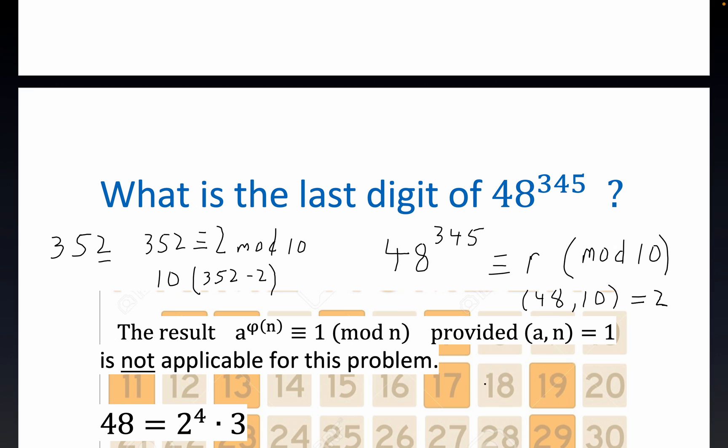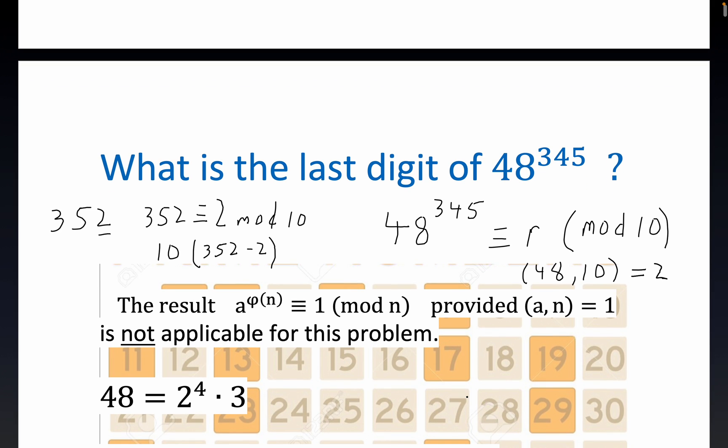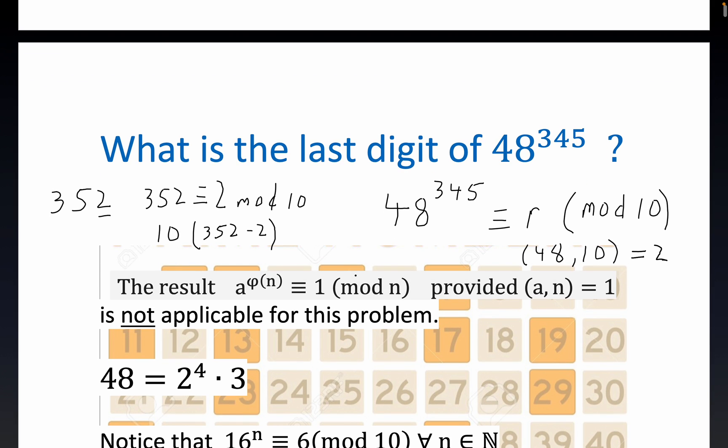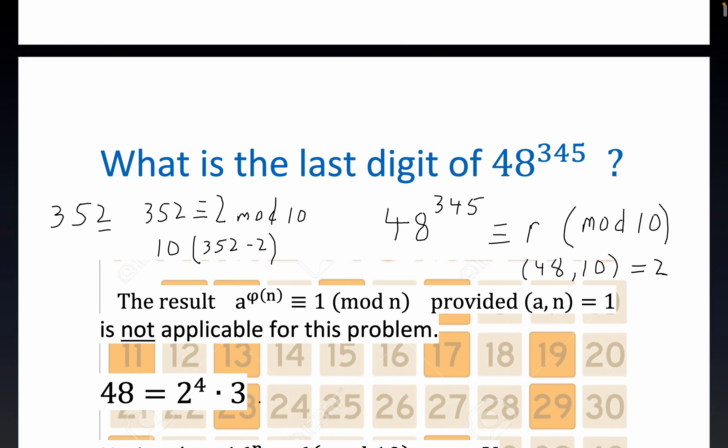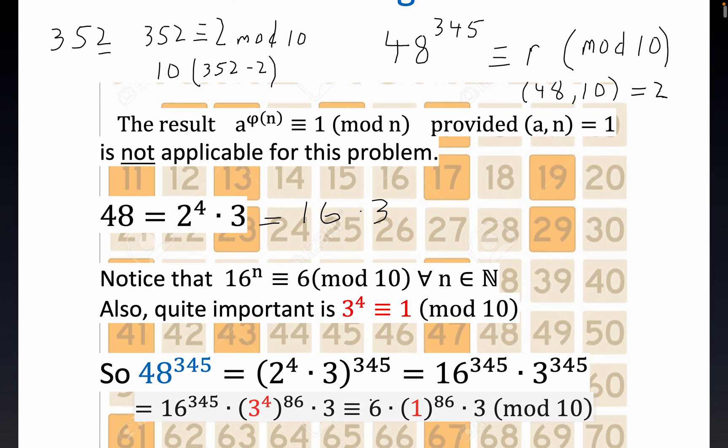Now, 48 has a prime decomposition of 2^4 times 3, which is the same thing as 16 times 3. That prime factorization - that's why they call it the fundamental theorem of arithmetic.